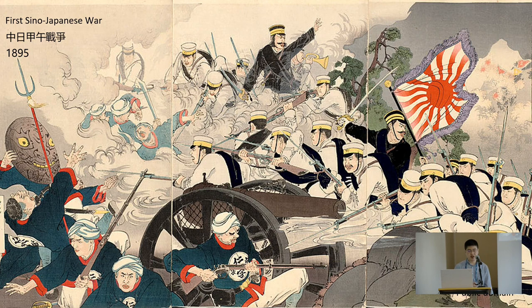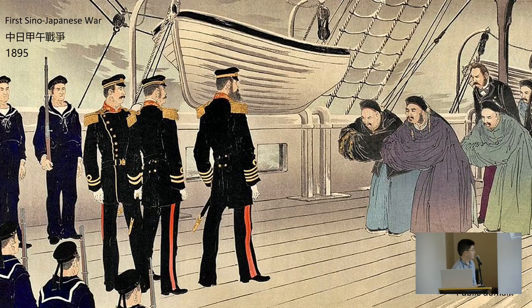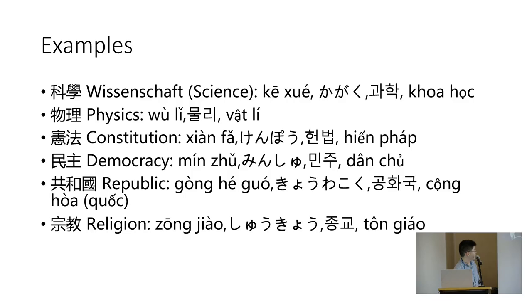After the Sino-Japanese War, as Japan won and Taiwan became part of Japan, Chinese people thought they had to learn from Japan. So all these words came back to China. For example, 'kēxué' — originally a translation from German — means 'the knowledge of different disciplines.' It's kind of a reverse flow from Japan back to China.